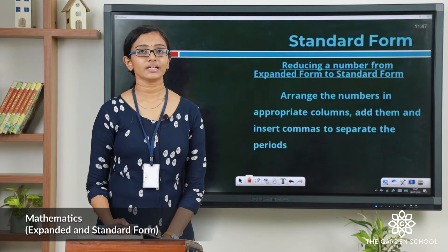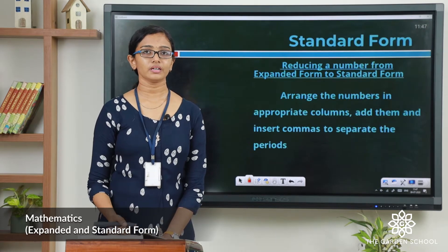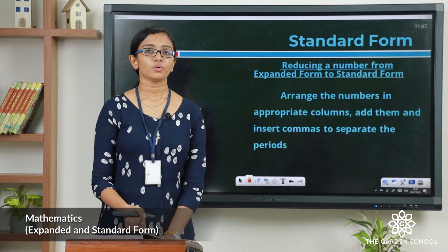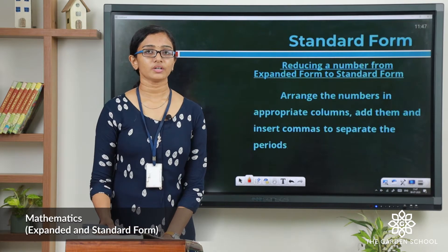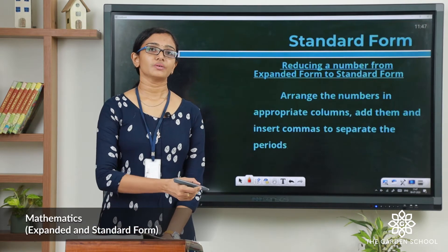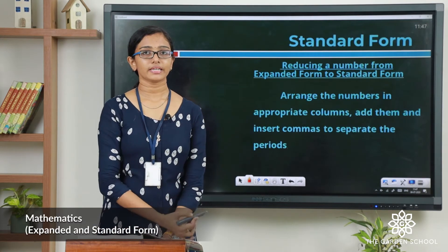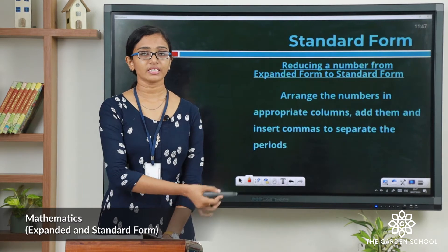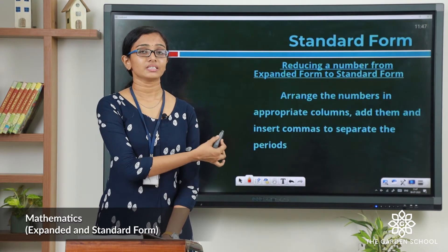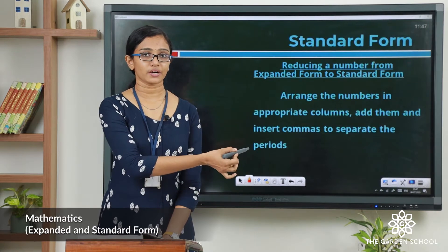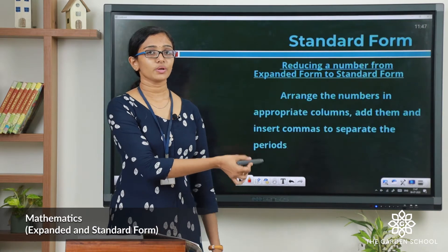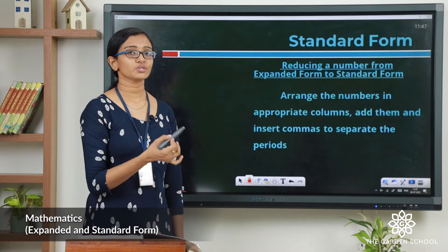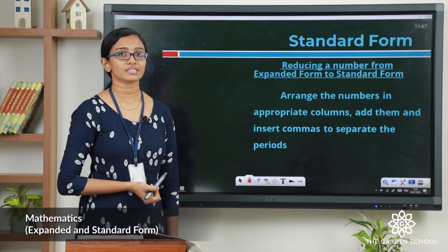Let us see how we can write the standard form of a number given the expanded form. When the expanded form is given, you have to write down all the numbers vertically in appropriate columns, add them together, and you will get a resulting number. This is the short form of the expanded form, and when you insert commas in between the digits to separate the periods, you get the standard form.